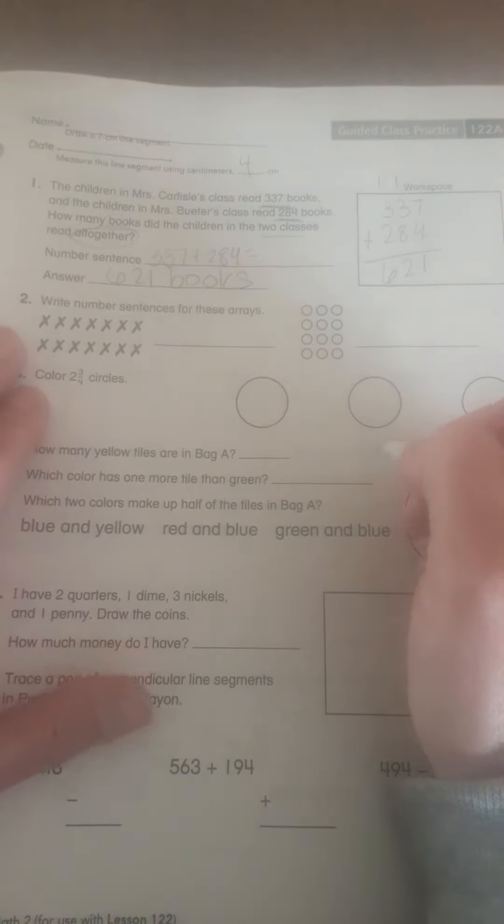Write the number sentence for these arrays. So I have 2 groups, and each of these groups has 1, 2, 3, 4, 5, 6, 7. And I know that is 14.